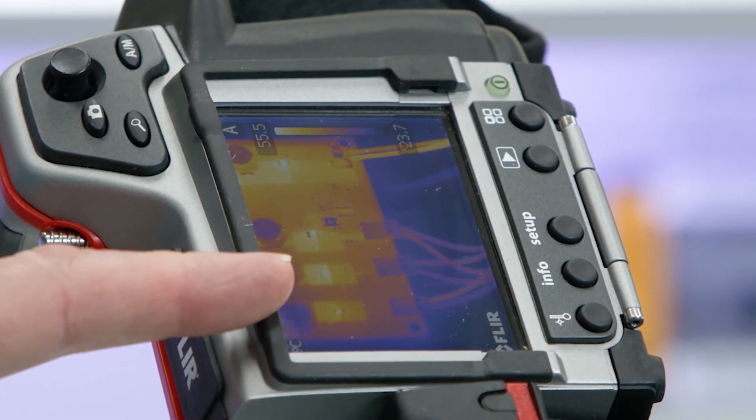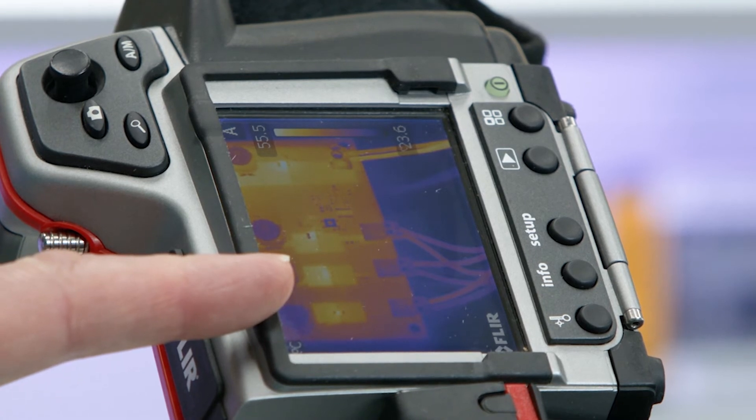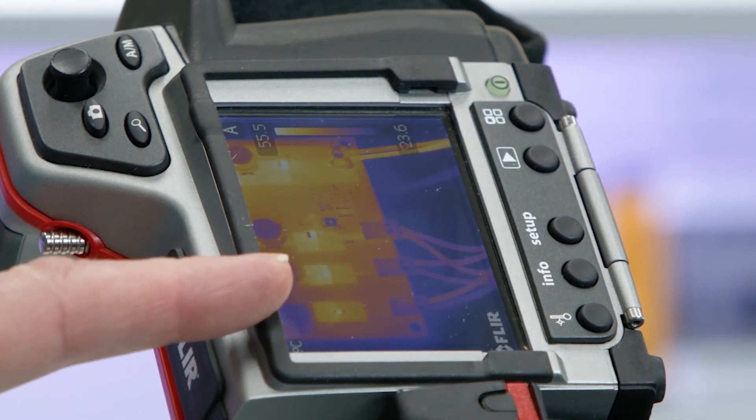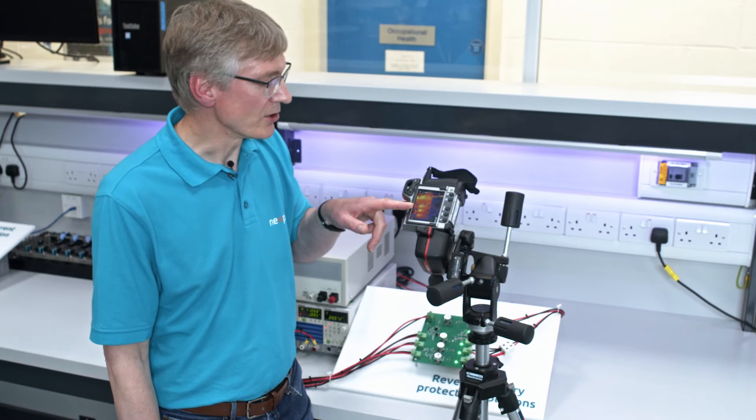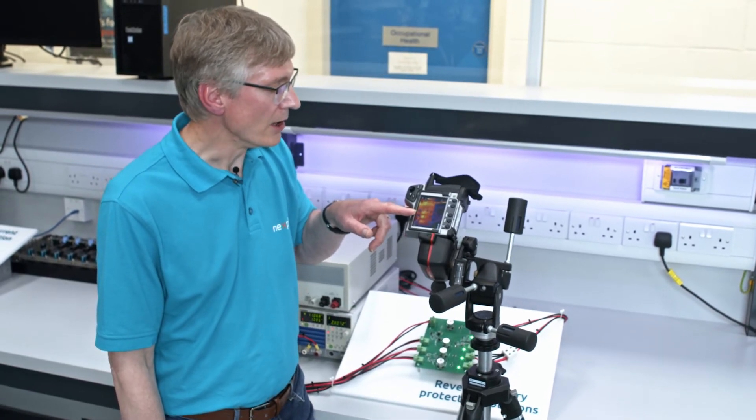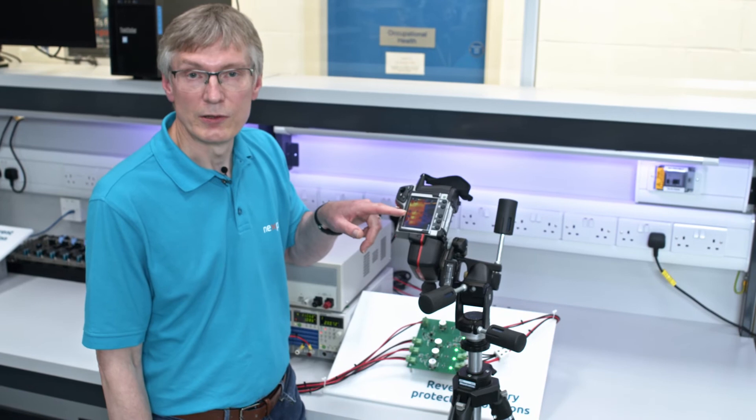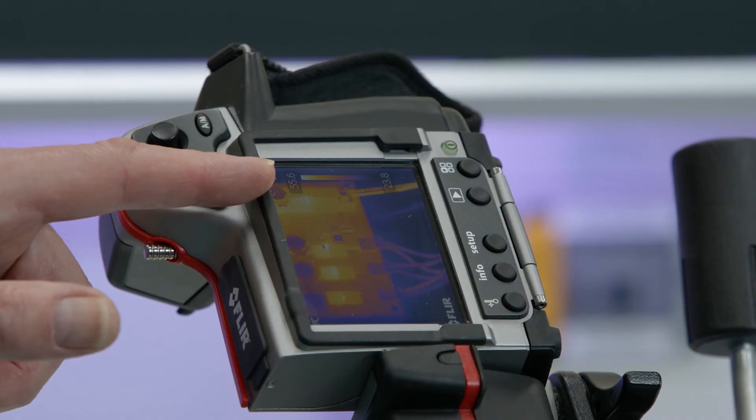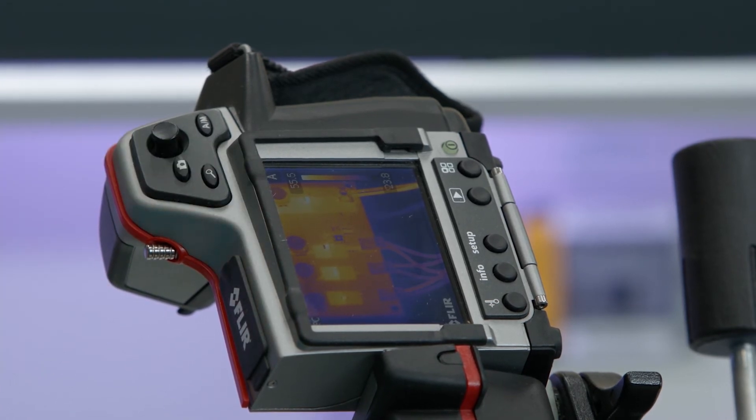The PN rectifier is at the bottom. The next one up is the Schottky rectifier which is conducting a slightly higher current if you remember and this is also the same temperature and then finally we have the N channel MOSFET at the top. In all cases you can see the temperature rise is about the same and it's about 30 degrees.